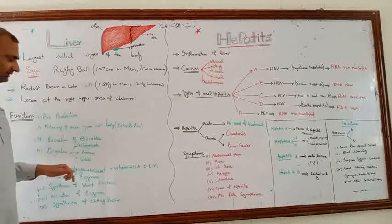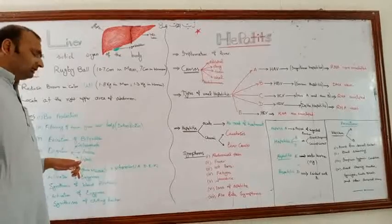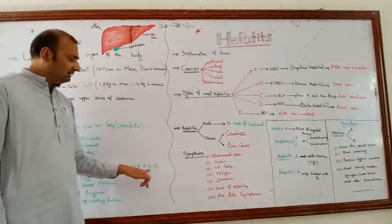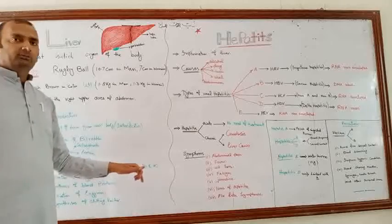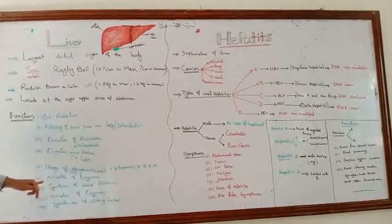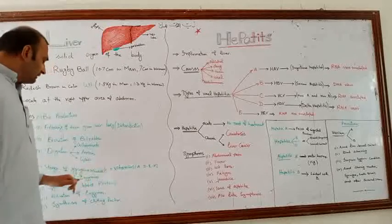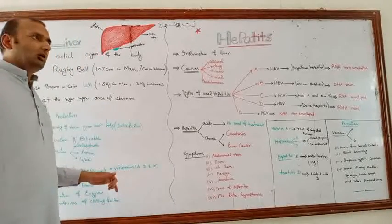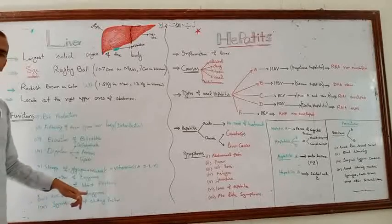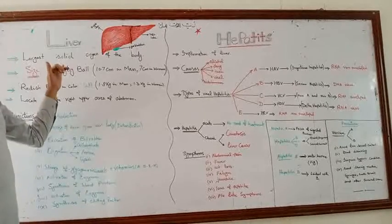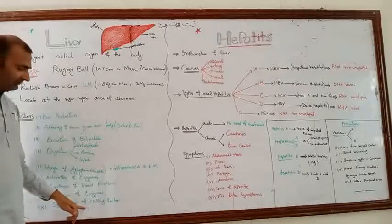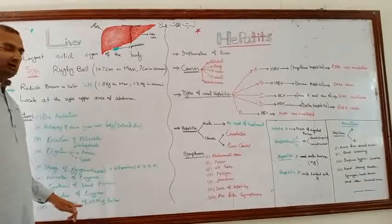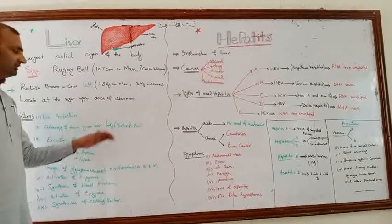Number five is the storage of glycogen. Glucose is reserved in the form of glycogen, and minerals like iron and vitamins A, B, and K are stored in the liver. Number six is the activation of enzymes. Number seven is the synthesis of blood proteins like albumin, which regulates our osmotic balance. The last function is the synthesis of clotting proteins, such as fibrin-related proteins, which are synthesized in the liver and play an important role in our body.